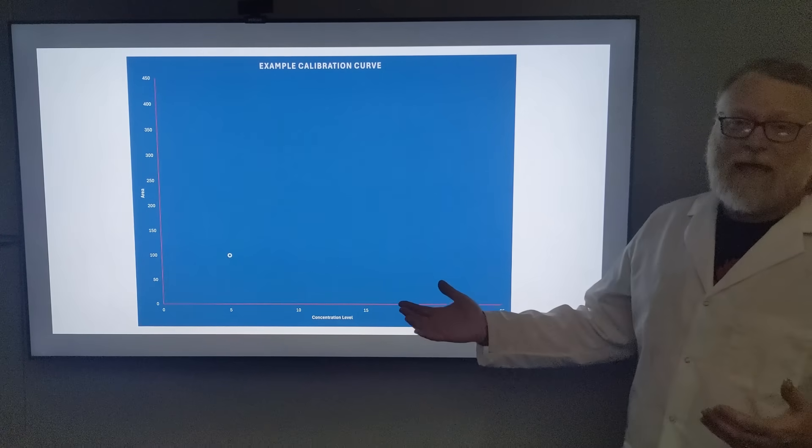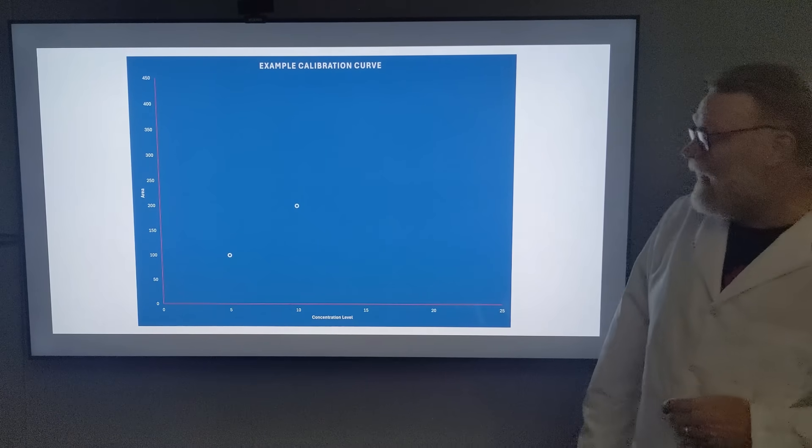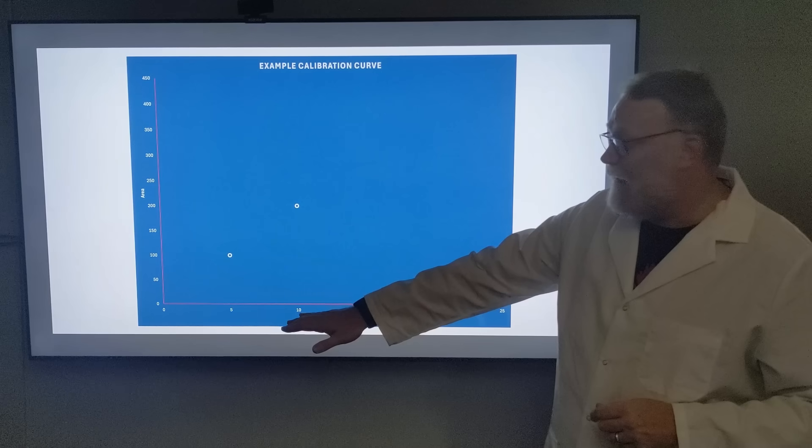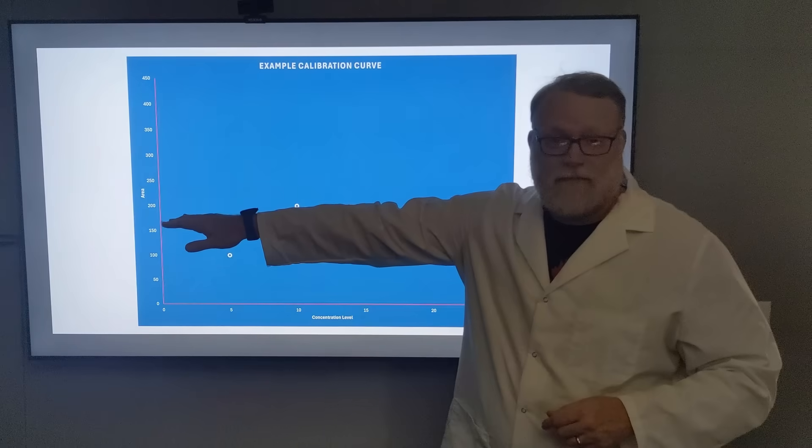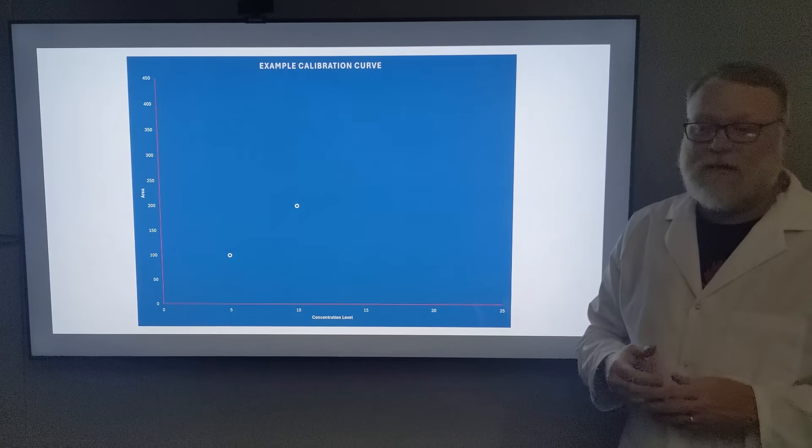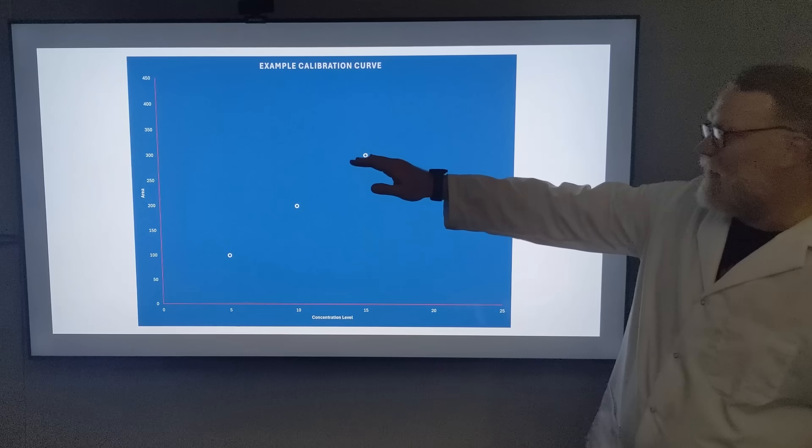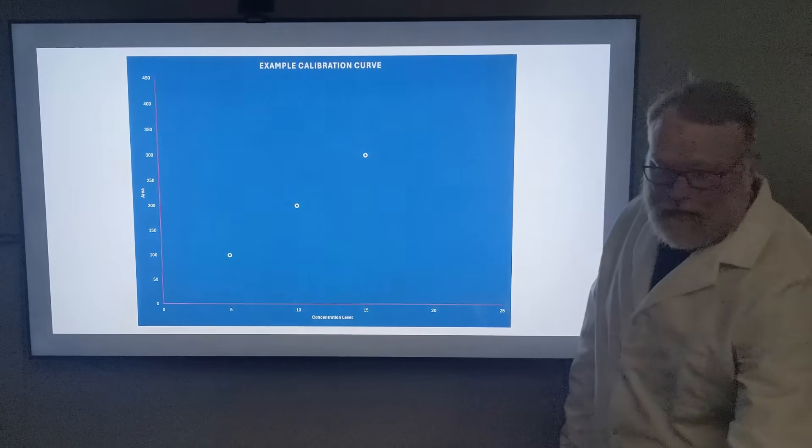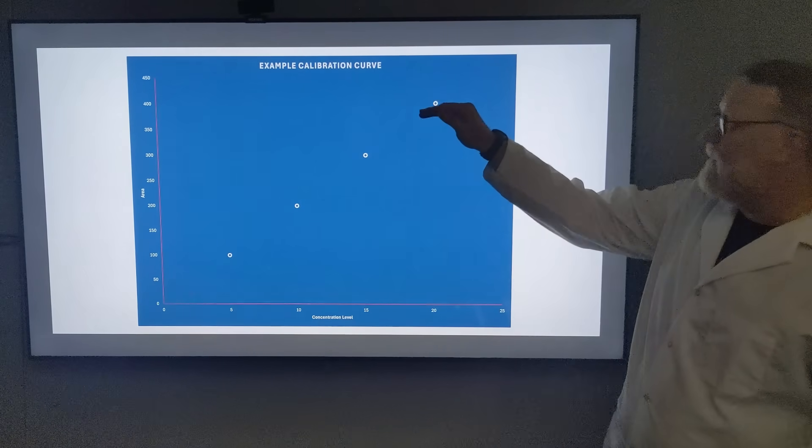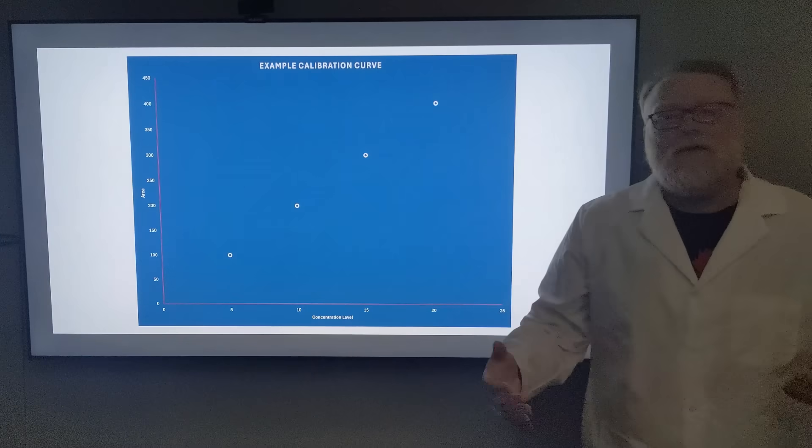The more points we add, the more confident we can be in our calibration curve. We add a second one: 10, which gives us 200 - 10 is twice 5, and it gives us twice as much area. Then we have 15, three times as much, so we have 300. And 20, our final point, gives us 400. So we have four points.